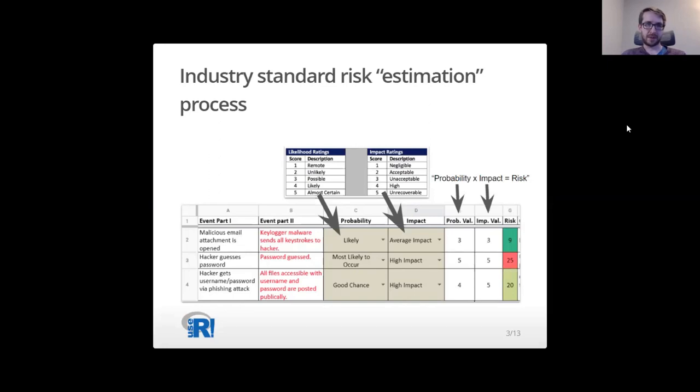The probability score is then multiplied by the impact score resulting in a risk score. Shown in this slide is an example worksheet where risk scenarios are on the left and probability and impact scores are on the right.